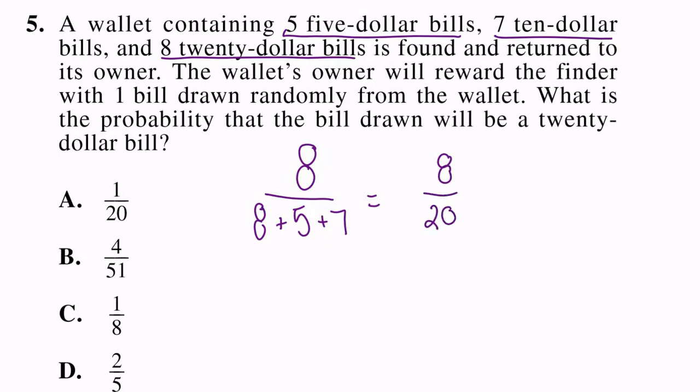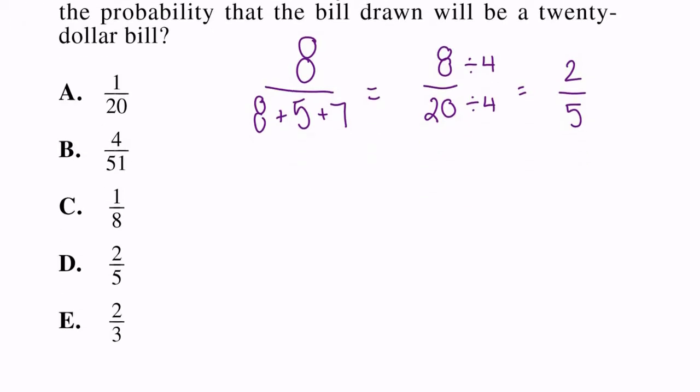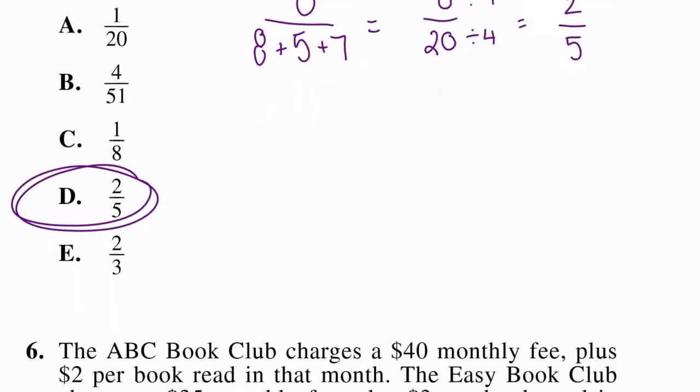Well we have 8 + 5 + 7. We add all of those up and we get 8 over 20, which we can further simplify because what number goes into both of those? 4. We divide both the top and the bottom by 4 and we get 2/5. So the probability that the bill drawn will be a 20 is 2 out of 5. Let me check our answers and D matches. So our answer to number 5 is D.